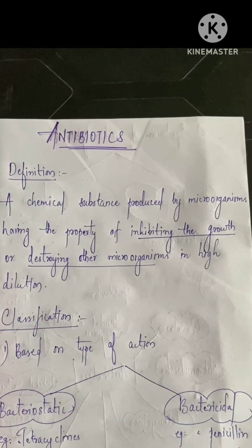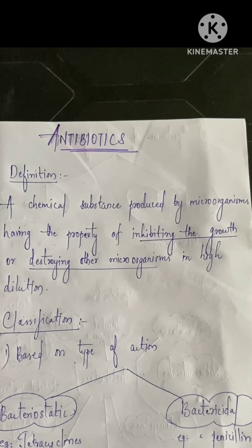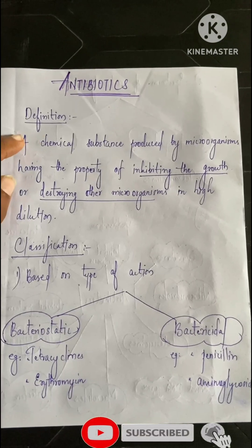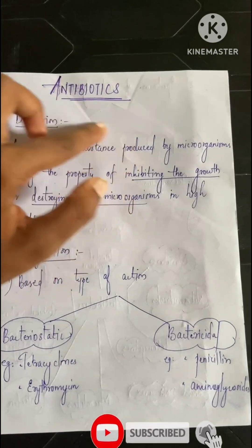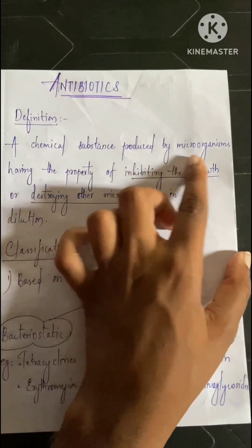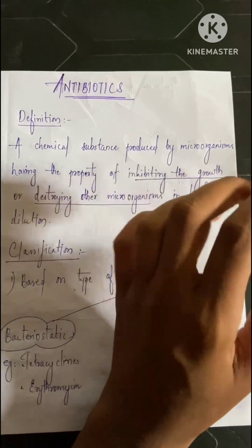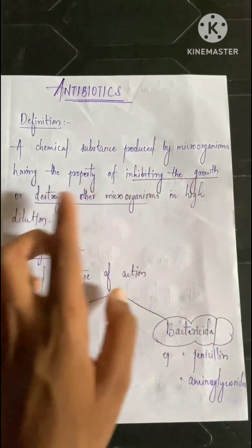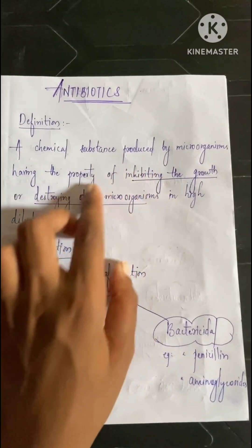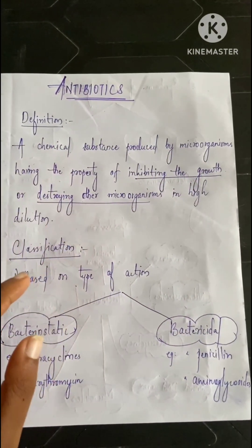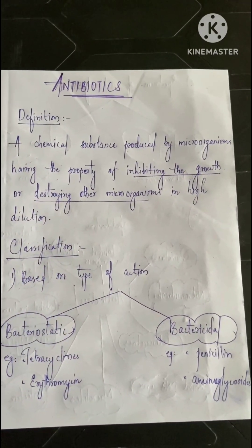So there are three main points in this definition. First, antibiotics are chemical substances produced by microorganisms. Second, they have the property of inhibiting the growth or destroying other microorganisms. So one microorganism produces a chemical substance which destroys another microorganism - that's basically what antibiotics are.